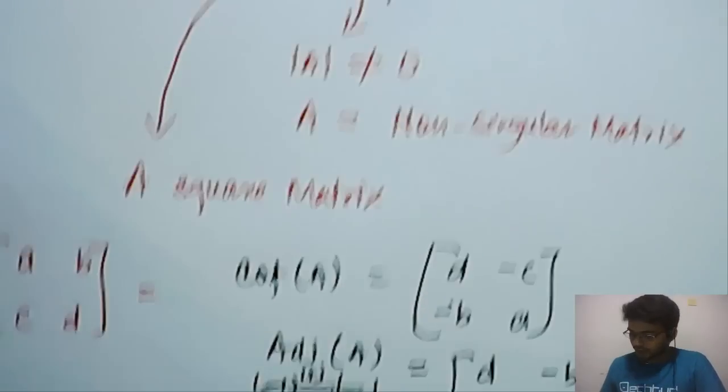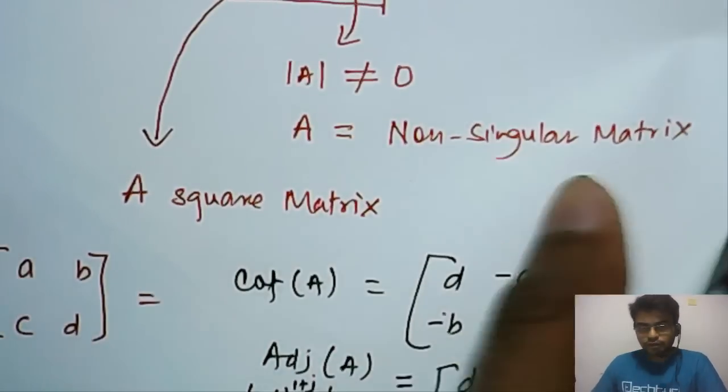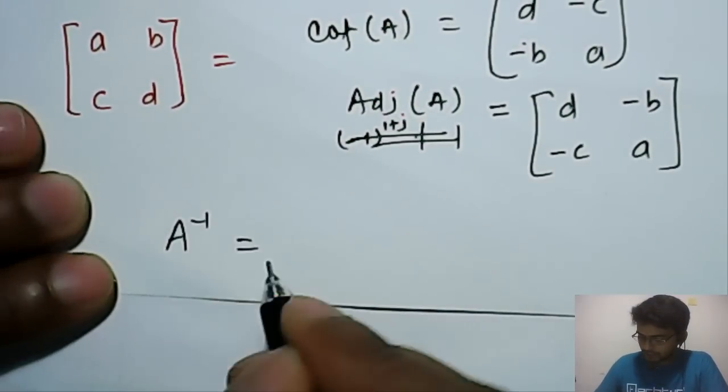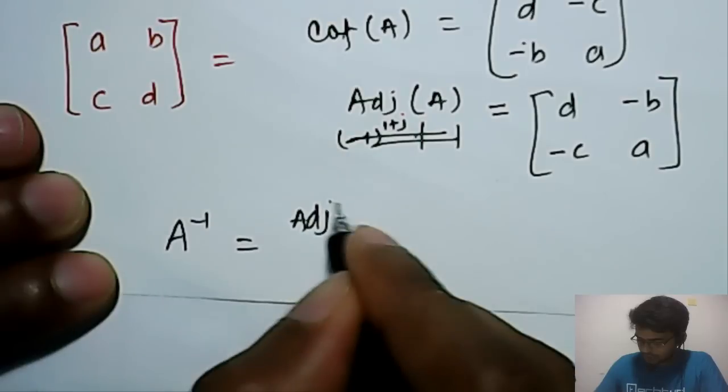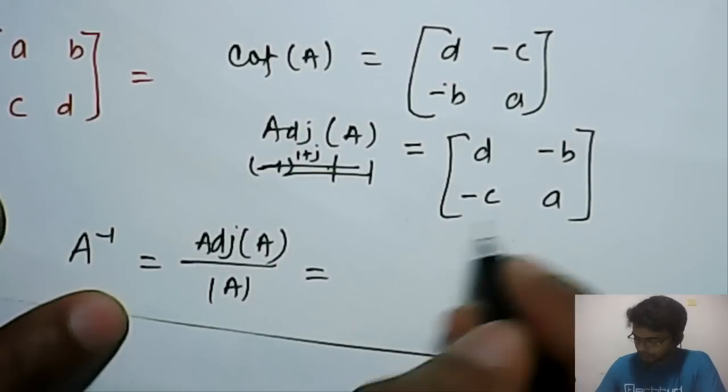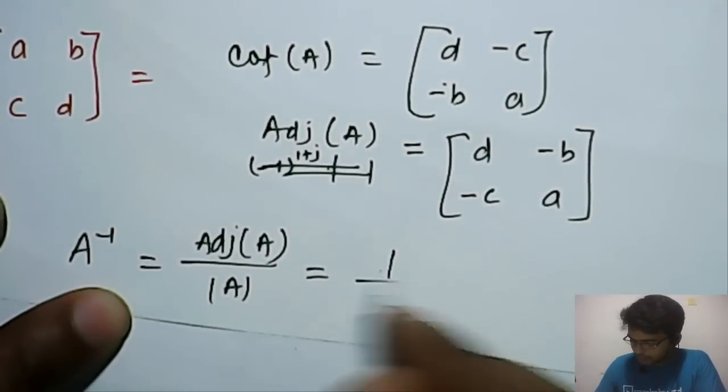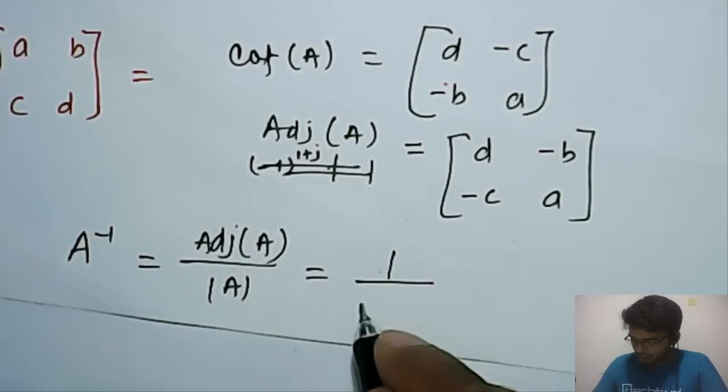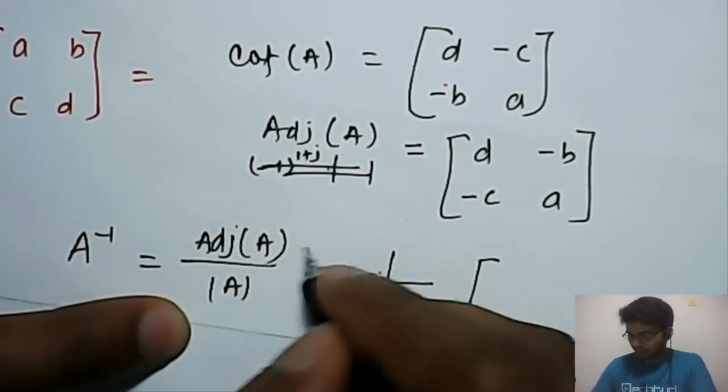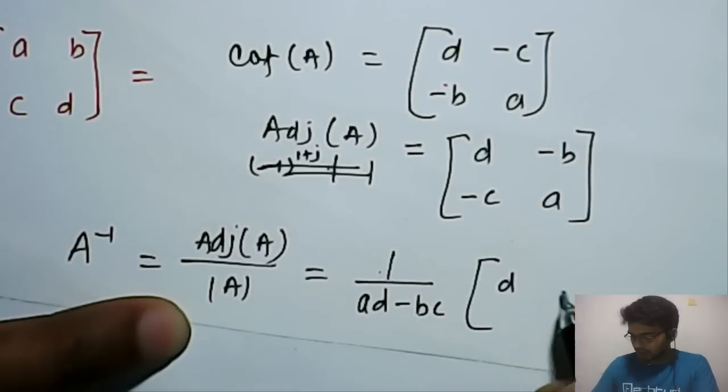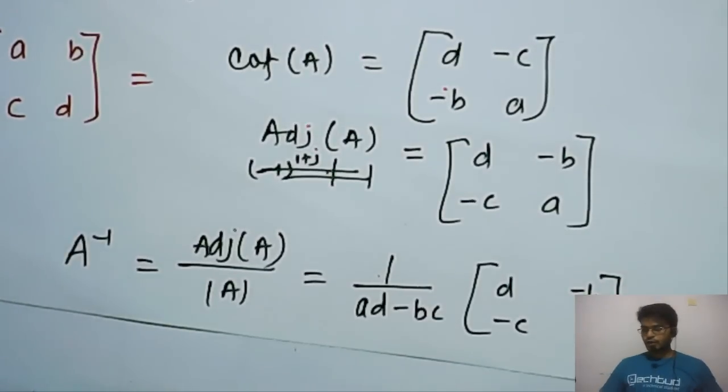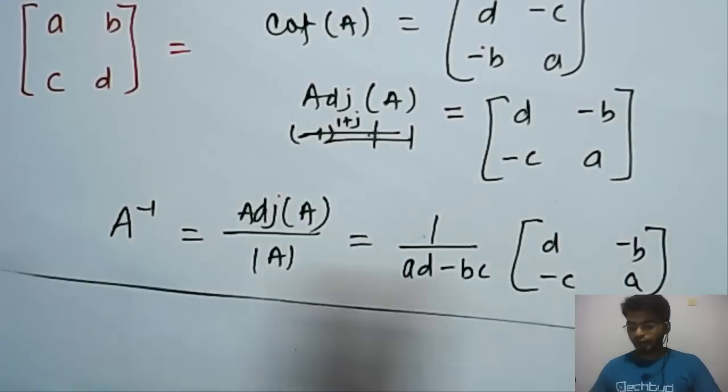Now, inverse of A. So, what will be the inverse of A? Inverse of A will become adjoint of A upon determinant A. So, it will be equal to 1 by determinant A is what? AD minus BC and then this one, adjoint of A. That is D, minus B, minus C, A. So, this is the A inverse.